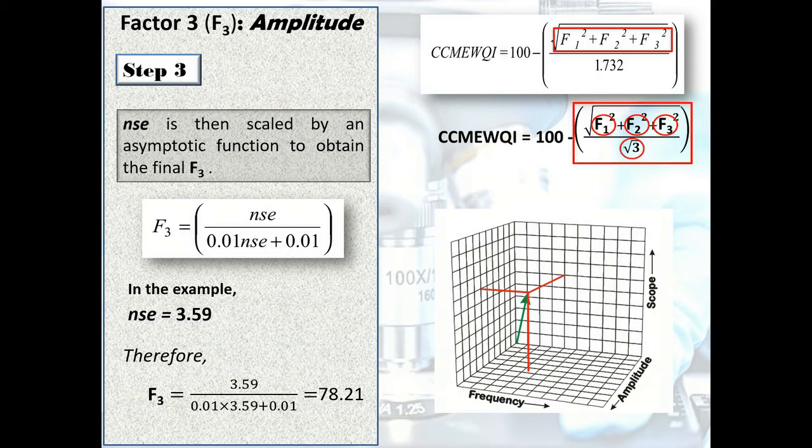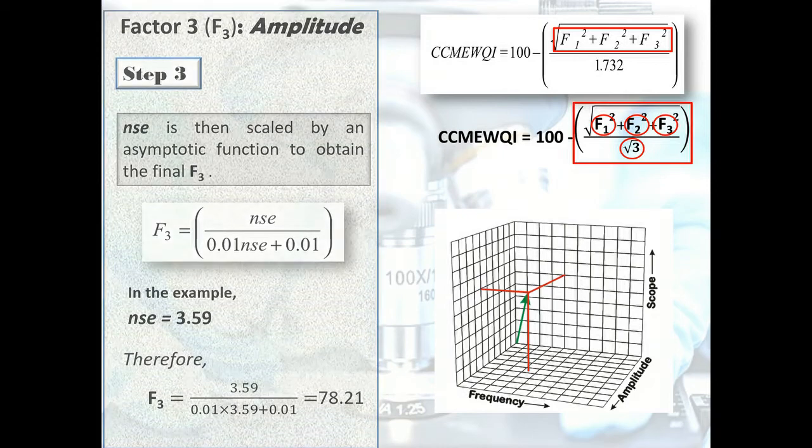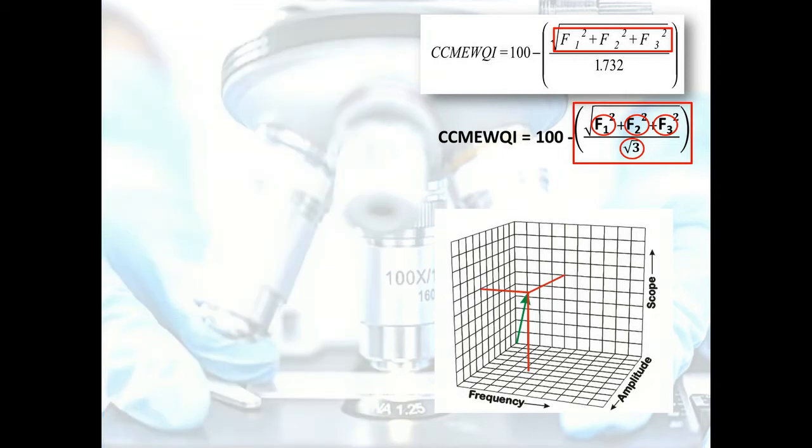When the water quality is good and less number of test values deviate from the prescribed standard, the value of scope, frequency, and amplitude are low, which will make the value of this entire component less. Therefore, 100 minus this component will yield a higher value between 0 and 100, signifying better water quality.